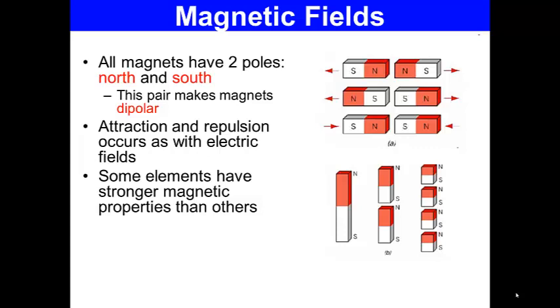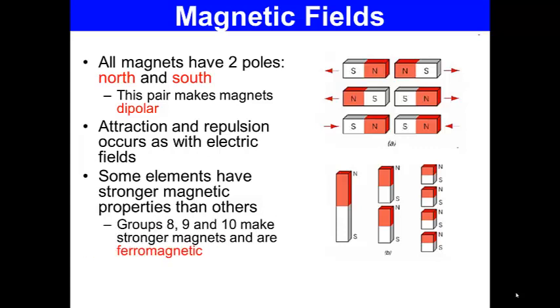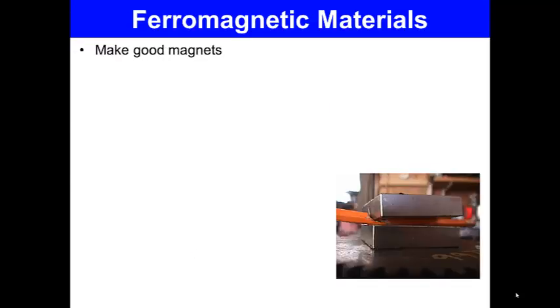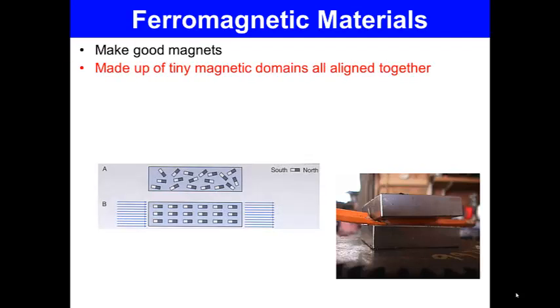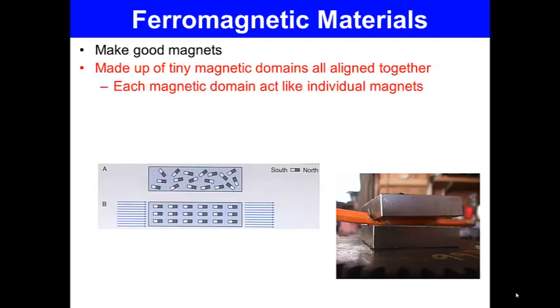Some elements have stronger magnetic properties than others. Groups 8, 9, and 10 make stronger magnets and are ferromagnetic. Examples of these metals are iron, nickel, and cobalt. Ferromagnetic materials make good magnets — they are made up of tiny magnetic domains that are all aligned together, and each magnetic domain acts like an individual magnet.